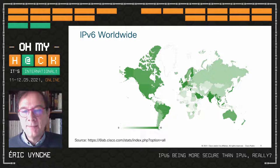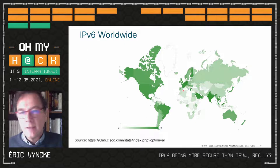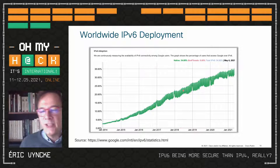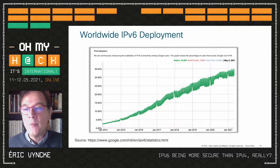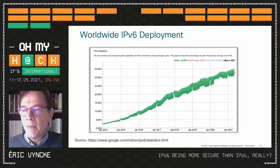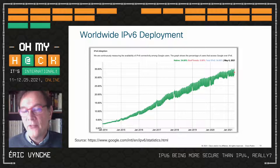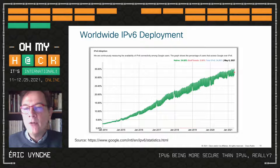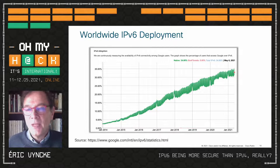Europe is quite green but it really varies country to country. Worldwide, looking at the number of connections going to any Google properties — Google, Gmail, YouTube — we have about one big third of people using Google properties going over IPv6, which is quite impressive. In my own country we have about 55–60% of users using IPv6 daily, without even knowing it.